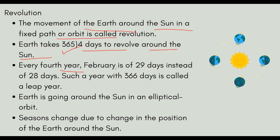Every fourth year we have 29 days in February. Why? Because the Earth takes 365 days and 6 hours to complete one revolution. After 4 years, those 6 hours add up to 24 hours — one extra day. So when it becomes 29th February, it is called a leap year.